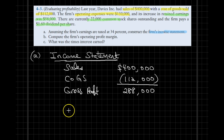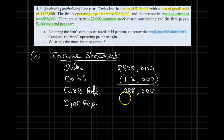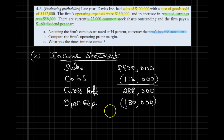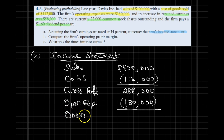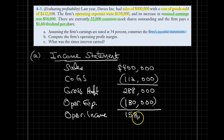I'm trying to align my numbers on the right side to produce a clean income statement. Next we have operating expenses, also provided in the problem, in the amount of $130,000. The difference gives us our operating income in the amount of $158,000.